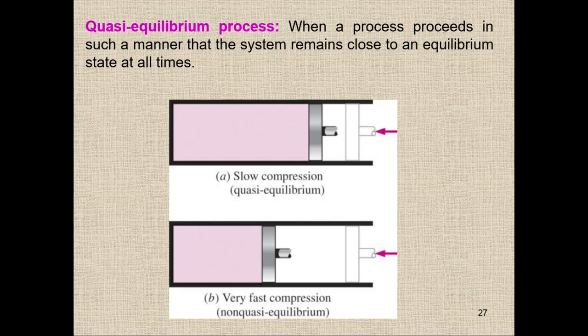We have different types of processes, but this one is the ideal process, which is called the quasi-equilibrium process. It is basically an ideal process and it doesn't exist in real life. The quasi-equilibrium process is defined as when a process proceeds in such a manner that the system remains close to an equilibrium state at all times — meaning the system is moving very slowly so that equilibrium is maintained at all times.